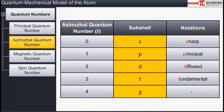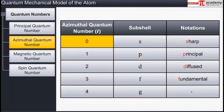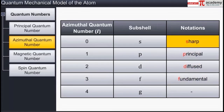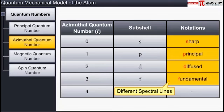Subshells corresponding to different values of l — that is 0, 1, 2, 3, 4 — are represented by the symbols s, p, d, f, g and so on. The first four notations are the initial letters of the words sharp, principal, diffused, and fundamental — words formally used to describe different spectral lines.